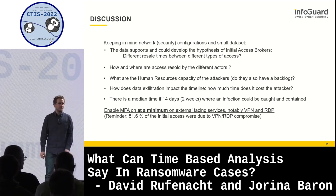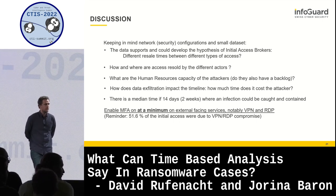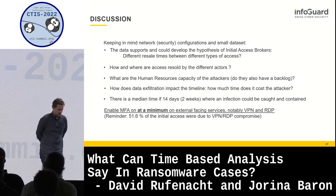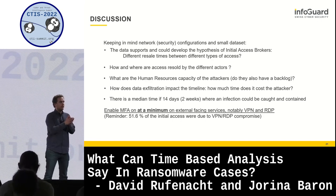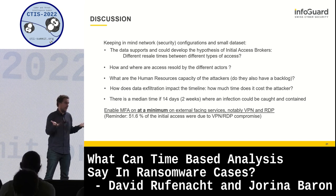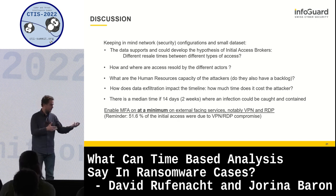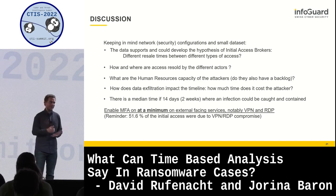Q&A: A questioner from Onif asks: you say 52% of initial access were due to VPN/RDP credentials - do you have data about the number of initial accesses via exploiting critical vulnerabilities? The difficulty is the victim data set - we don't have that data. If you have more data to exchange or we can discuss afterward, that would be an interesting data point.